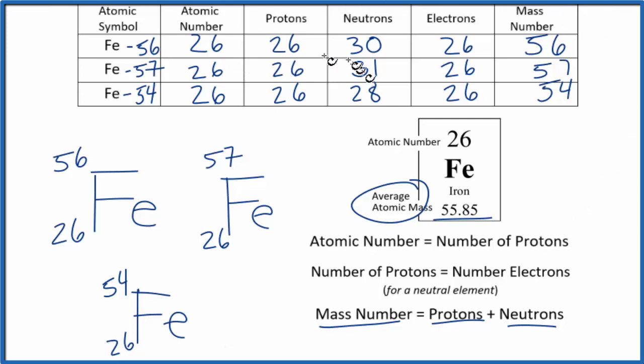This is Dr. B, finding the number of protons, neutrons, electrons, and mass number for iron. Thanks for watchin'.